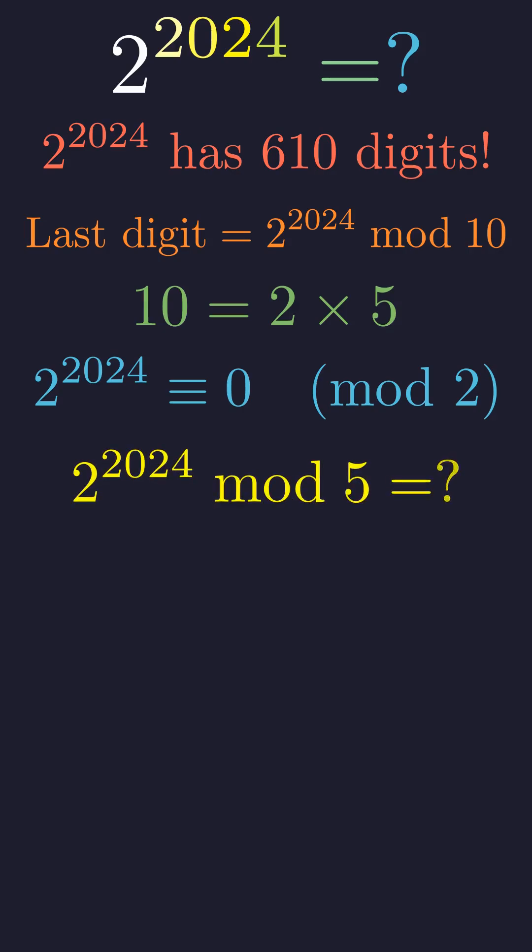The real question is, what happens modulo 5? This is where things get interesting and where we'll need some heavier mathematical machinery.